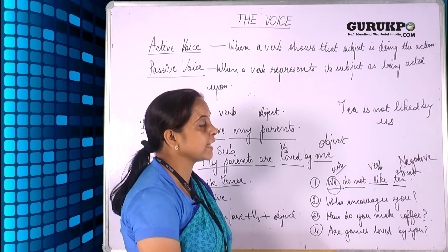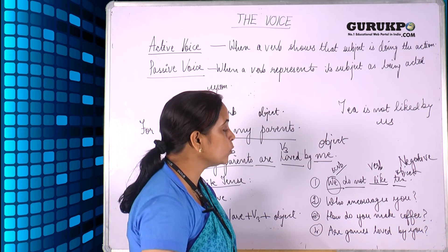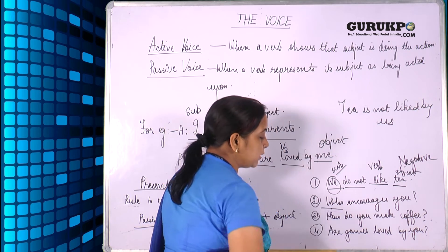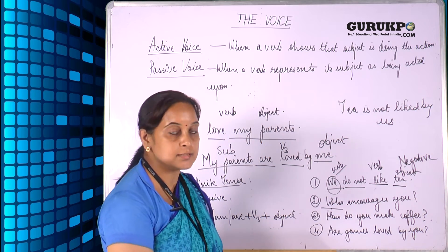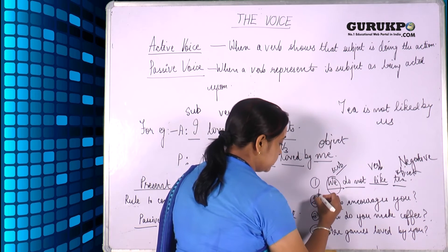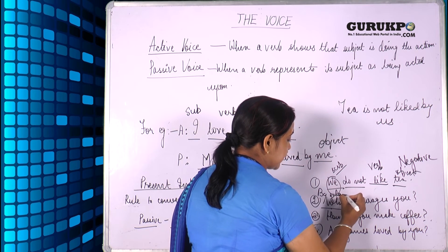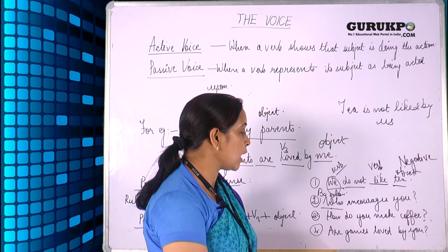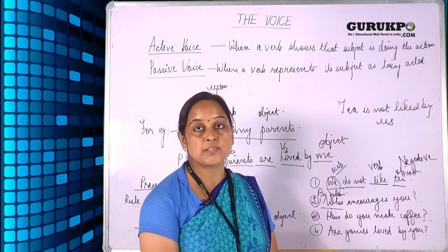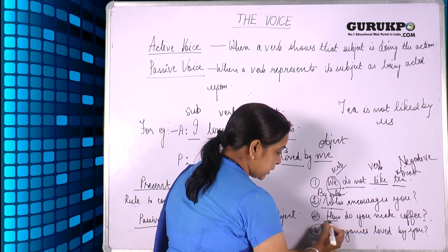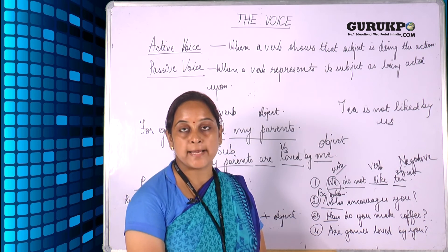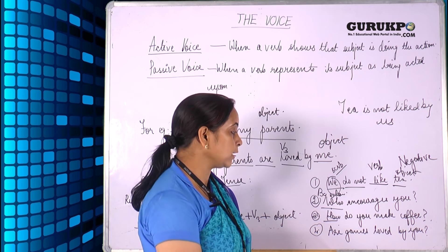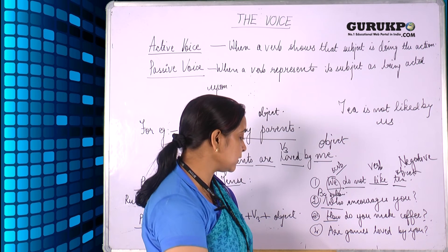Similarly, we have other sentences. 'Who encourages us?' — this is an interrogative sentence. When we convert this into passive voice, 'who' will become 'by whom,' and we start the sentence with 'by whom': 'By whom are you encouraged?' Next is 'How do you make coffee?' — this becomes 'How is coffee made by you?' In the case of 'how,' 'when,' 'why,' or 'what,' we start the sentence with these words only.